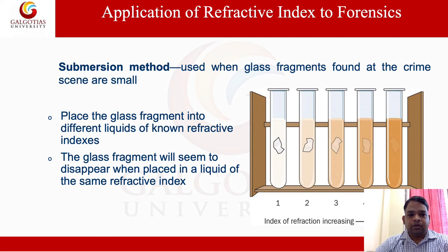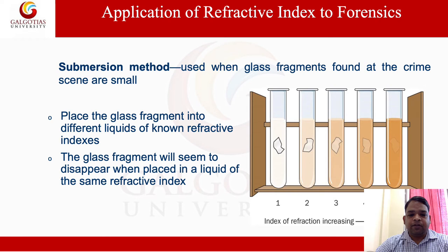Submerging method. The submerging method is used when glass fragments found at the crime scene are small. Place the glass fragment into different liquids of known refractive index. The glass fragment will seem to disappear when placed in a liquid of the same refractive index. Similarly, there are more different methods, known as the flotation method and the density gradient method.